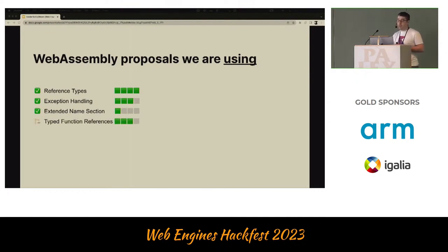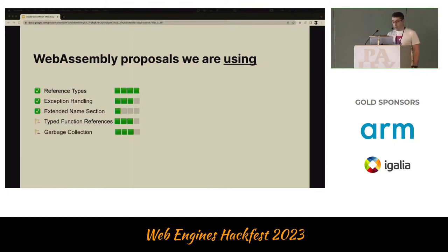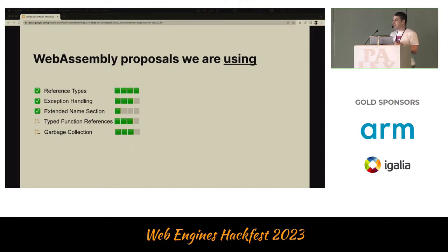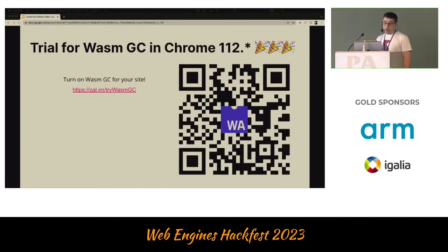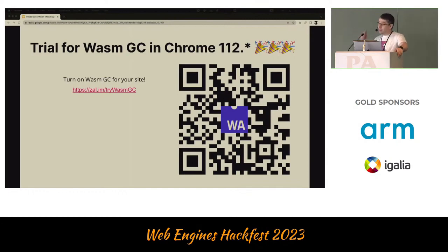Next is typed function references — it adds better typing for function references and instructions to call functions by reference; it's on phase three. And the last one, but not least, is the garbage collection proposal. Interestingly, the proposal has only one sentence about garbage collection itself, but it introduces high-level concepts required for languages with garbage collection, such as structures, fields, references, and so on — also in phase three. By the way, the origin trial for Wasm GC in Chrome is open for registration, so you can turn on Wasm GC for your site.